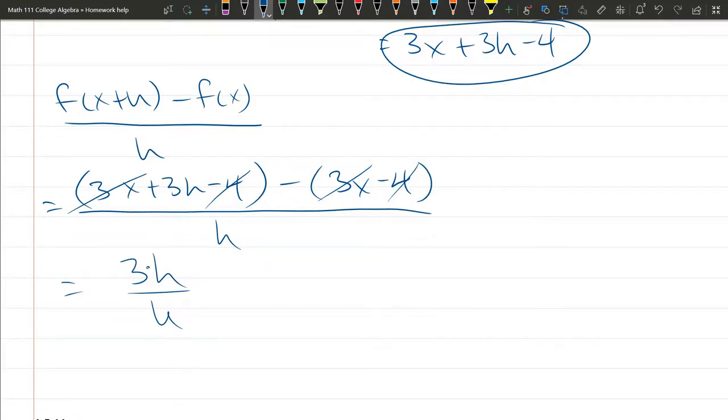We can cancel right now because it's 3 times h. And remember the opposite of multiplication is division. So we're multiplying by h, dividing by h, and they cancel each other out. We're just left with 3.